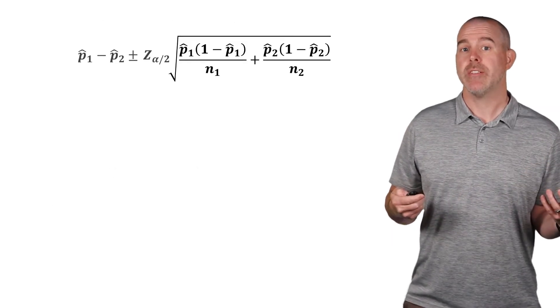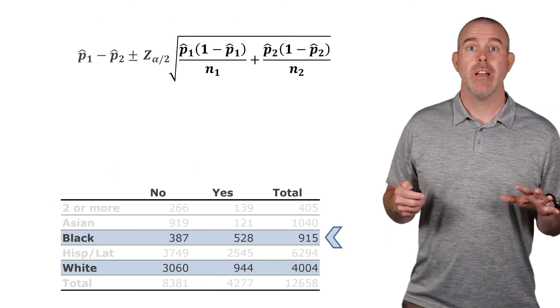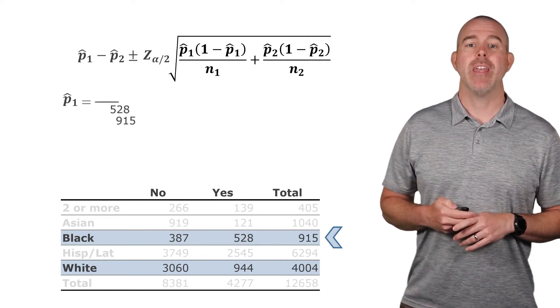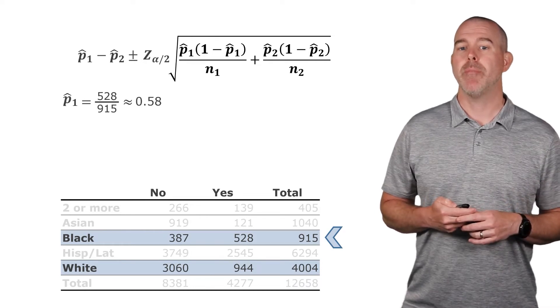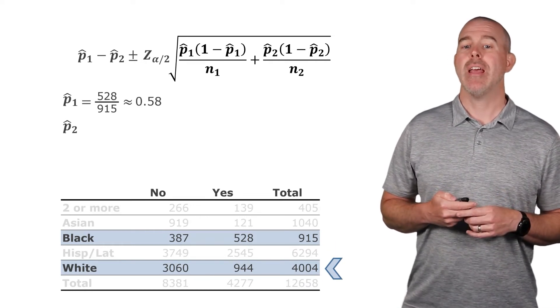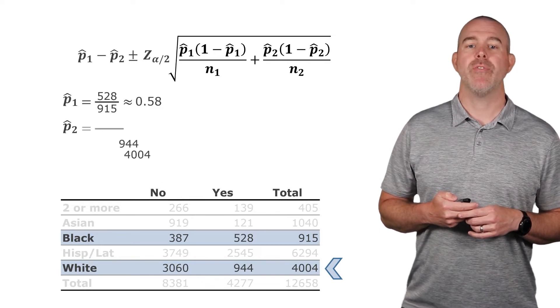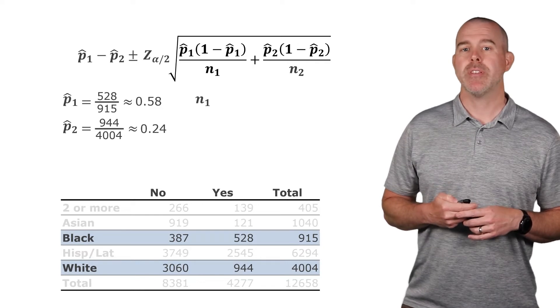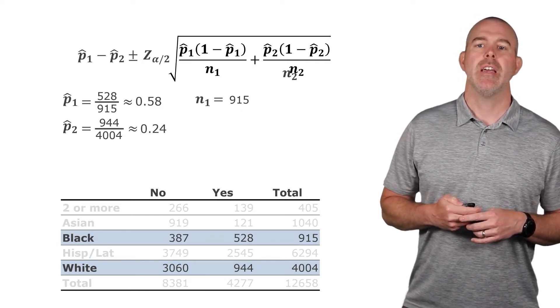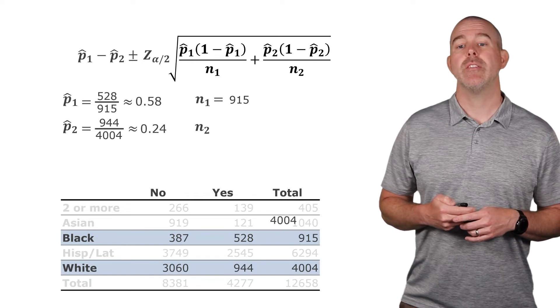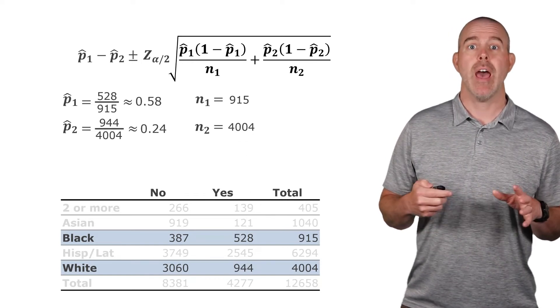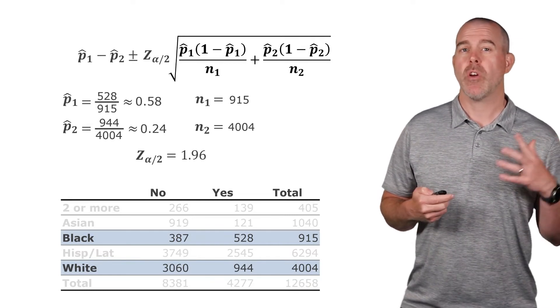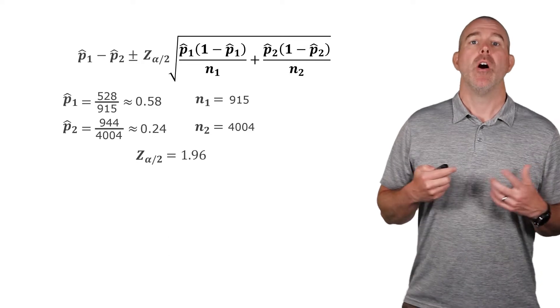Let's try that for this example. Here's our data. Let's pull in the numbers for the black students. So we have p one hat, that'll end up being 528 over 915. That's about 58%. For the white students p two hat, that'll be 944 out of 4004. That's about 24%. We have sample size for the black students that's 915, and the sample size for white students is 4004. And then we need a z, z alpha over two for a 95% confidence interval. That's our old friend 1.96.